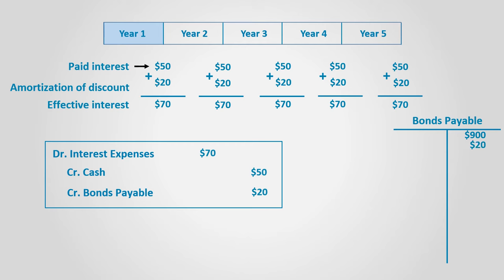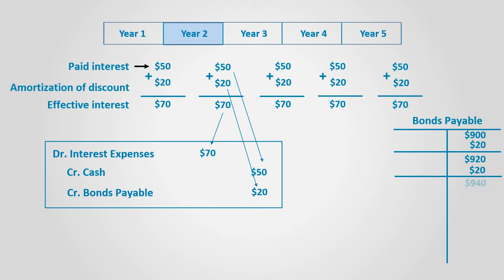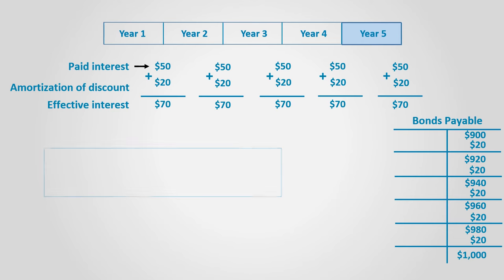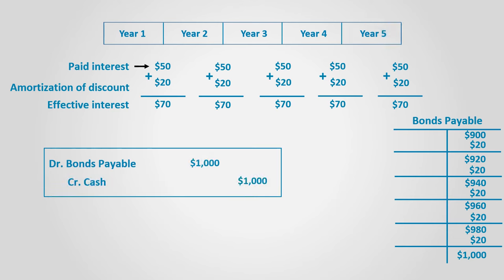Now the balance of bonds payable is $920. After the second year, the same entry is done again, and the balance of bonds payable is $940. And so on until the fifth year, where the balance of bonds payable is $1,000. When it is paid to the bondholder, the following entry is done: debit bonds payable for $1,000 and credit cash for $1,000.